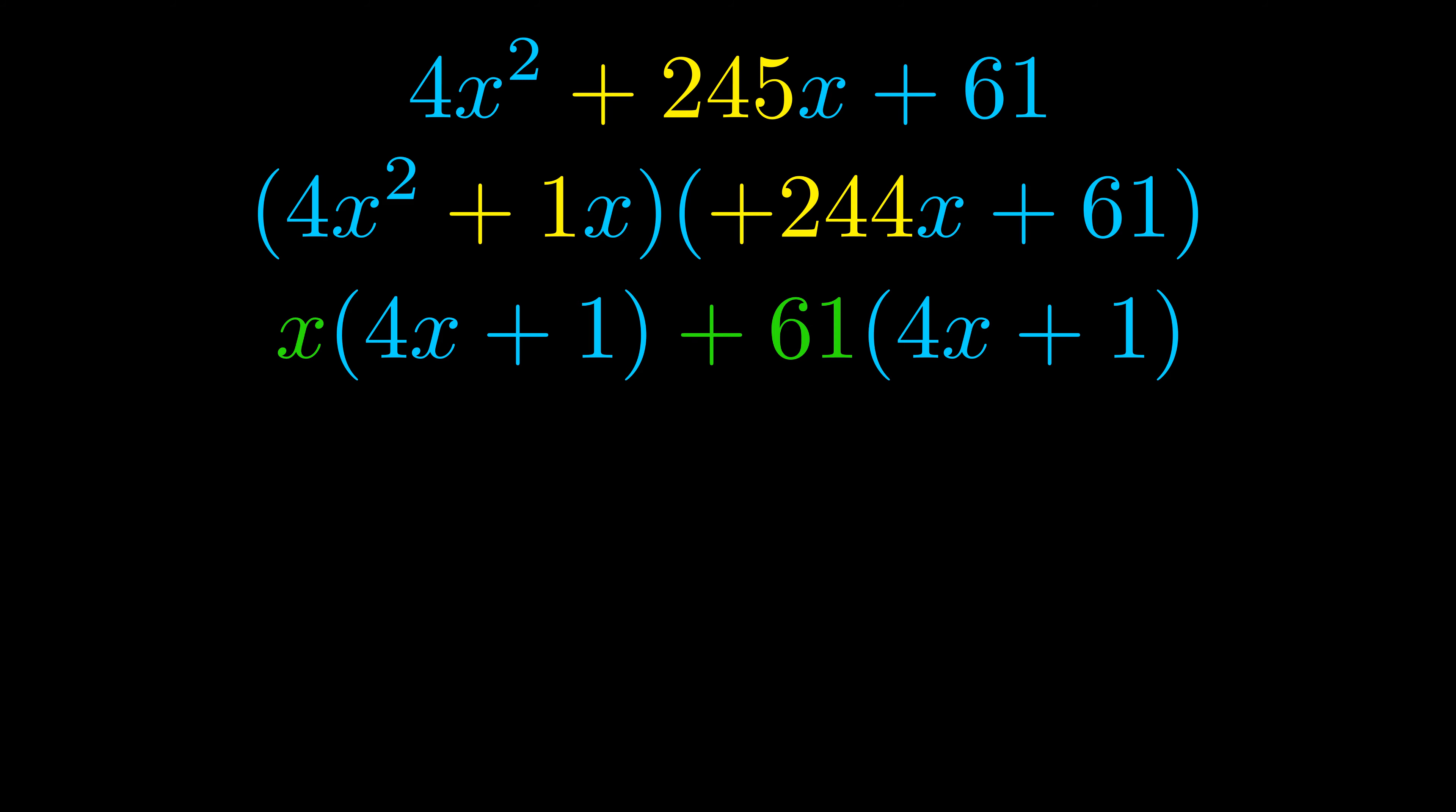Notice also how what remains inside of the parentheses is the same in both cases. The blue values are the same. Those blue values will become one of our factors and we will combine the two green values, the GCFs that we pulled out, to get the other one.